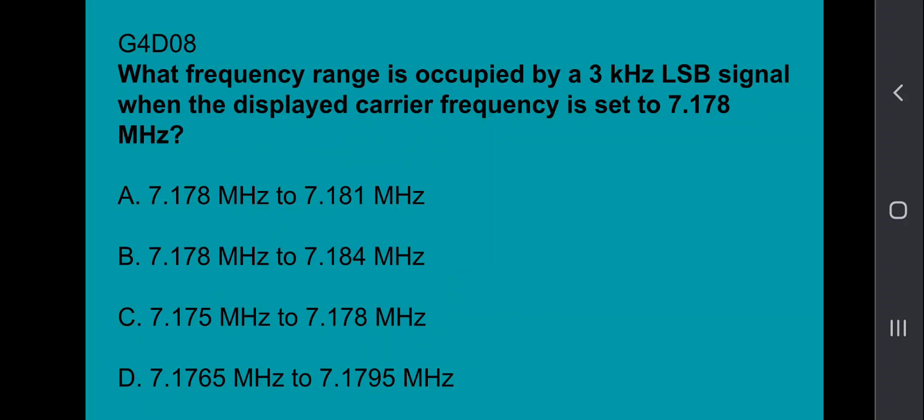G4D08, what frequency range is occupied by a 3 kilohertz lower sideband signal when the displayed carrier frequency is set to 7.178 megahertz? That's going to be 7.175 megahertz to 7.178 megahertz. Because remember, we're going lower sideband, so the signal's occupied underneath.